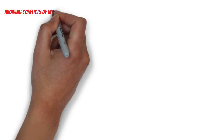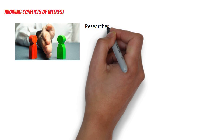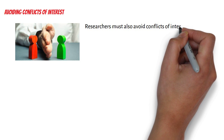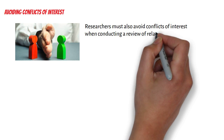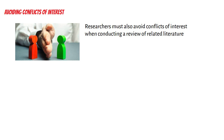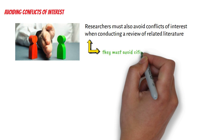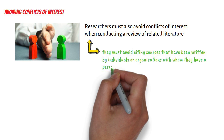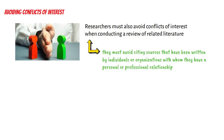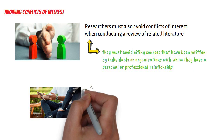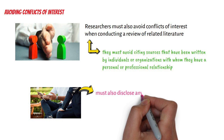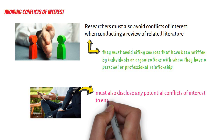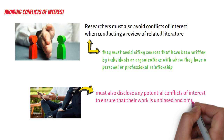Sixth, avoiding conflicts of interest. Researchers must also avoid conflicts of interest when conducting a review of related literature. This means that they must avoid citing sources that have been written by individuals or organisations with whom they have a personal or professional relationship. Researchers must also disclose any potential conflicts of interest to ensure that their work is unbiased and objective.